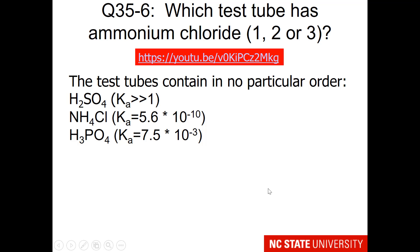So now, of course, it's your turn to think about this. We have three test tubes containing one of the following acids. Sulfuric acid, with a very large Ka. Ammonium chloride, with a very small Ka. And phosphoric acid, with a small but reasonable Ka. We'd like to know which test tube has ammonium chloride. So take a look at these Ka's and decide for yourself.